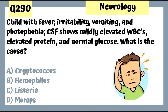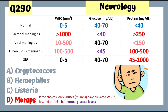Question 290: A child with fever, irritability, vomiting, photophobia, with CSF showing mildly elevated white blood cells, elevated protein, and normal glucose — consistent with viral meningitis. Only viral meningitis (e.g., mumps) has elevated white blood cells and elevated protein but normal glucose levels.